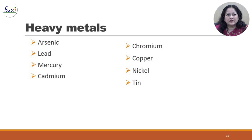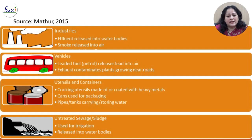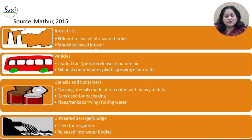Coming on to heavy metals. The heavy metals of concern are arsenic, lead, mercury, cadmium, chromium, copper, nickel and tin. These enter the food chain because of industries which release effluents into water bodies, smoke into the air or bury their waste in soil. Vehicles which use leaded fuels release lead into the air, contaminating plants growing near roads. Various utensils and containers made of metals including cooking utensils can leach these metals into food. Pipes and tanks carrying or storing water can also leach heavy metals into the water. Untreated sewage and sludge used for irrigation or released into water bodies can add to contamination levels.